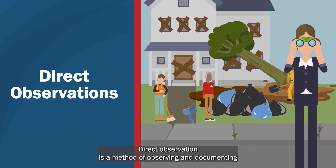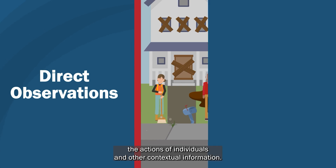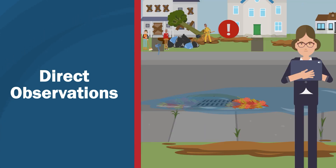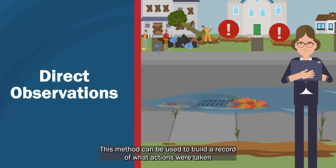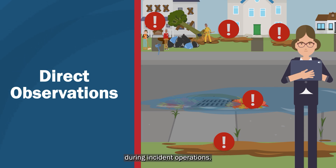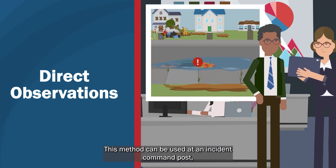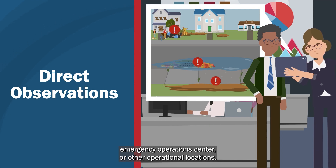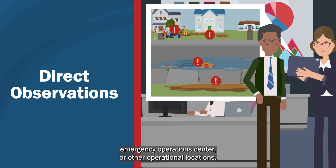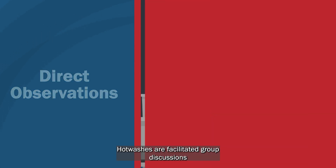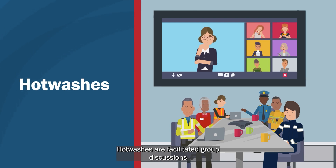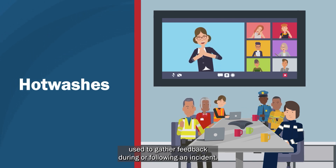Direct observation is a method of observing and documenting the actions of individuals and other contextual information. This method can be used to build a record of what actions were taken during incident operations, at an incident command post, emergency operations center, or other operational locations.